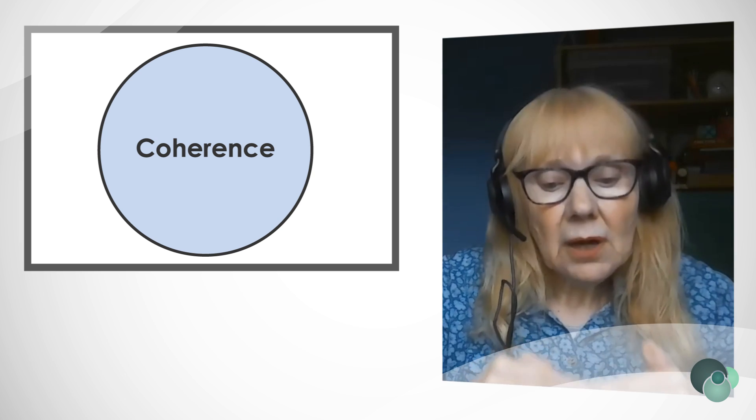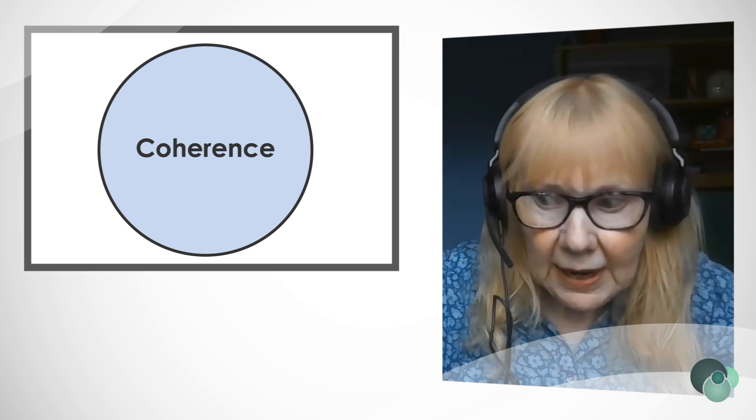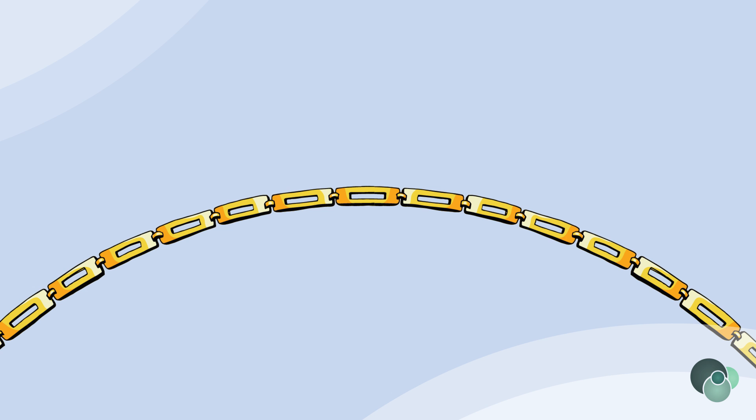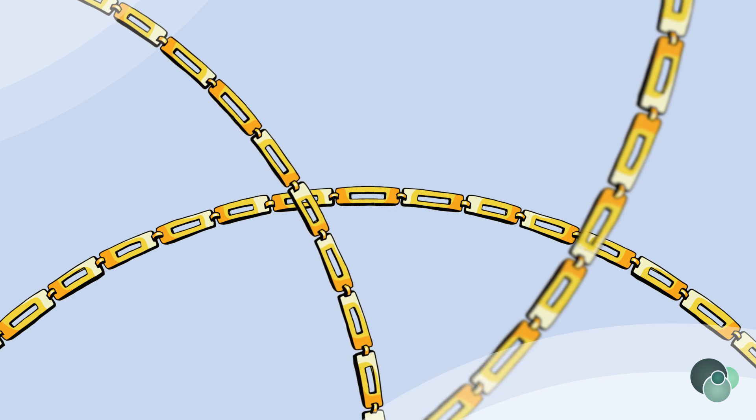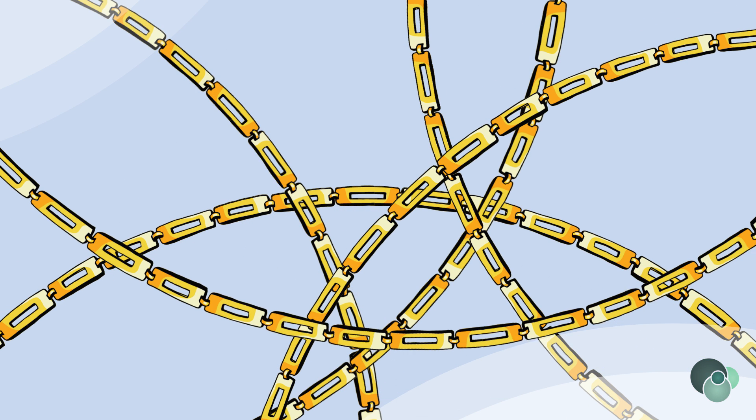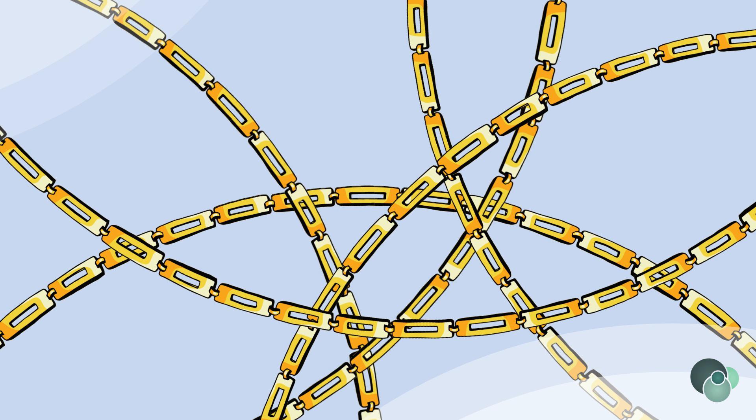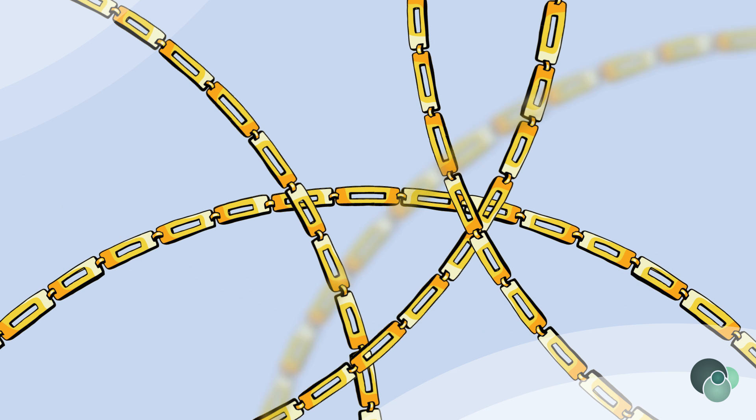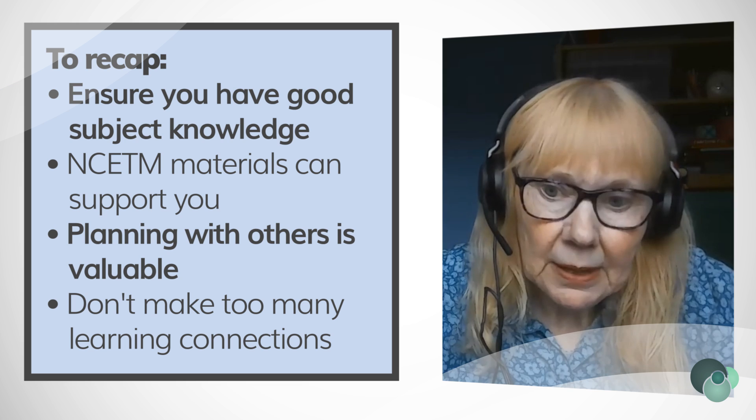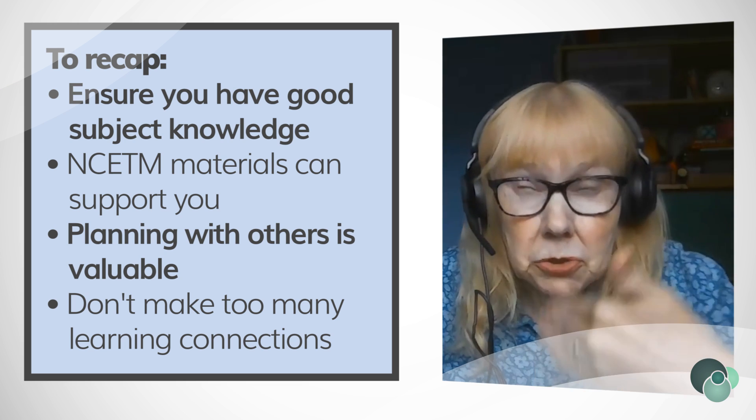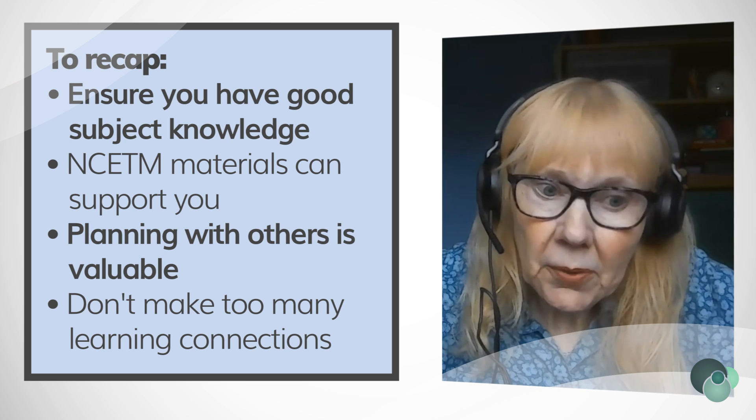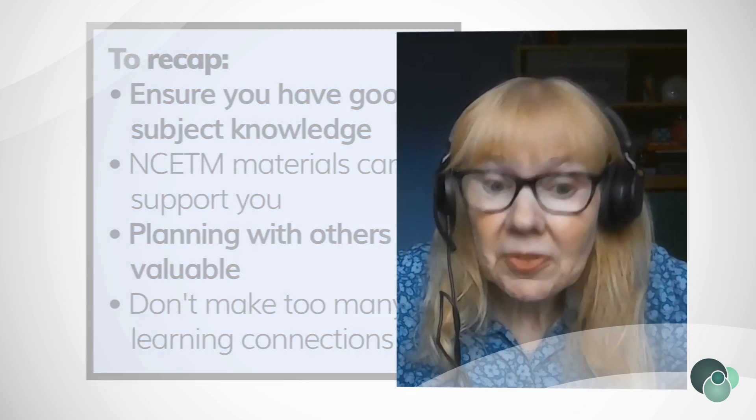One thing I would guard against: when you start looking at the map, you see all sorts of connections and you say, oh, I can bring that in and I can bring that. Don't overdo it. Too many connections can overload pupils. What's the core connection that needs to be made on this particular journey at this particular time that will advance the learning towards where you're going? Once these are secured, then other connections of course can be made. But don't try to put in masses of connections at once.